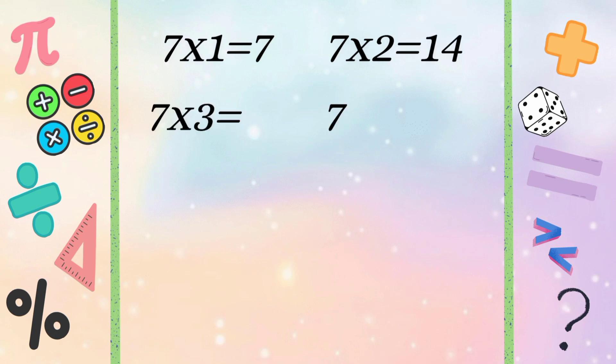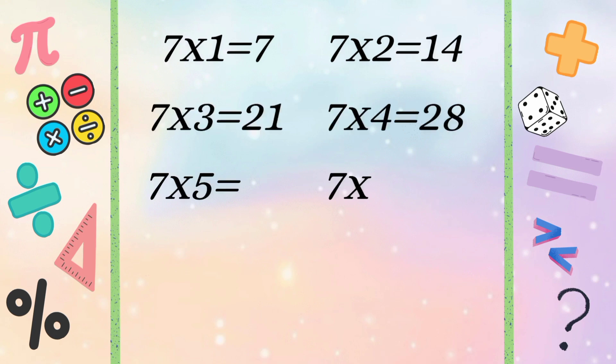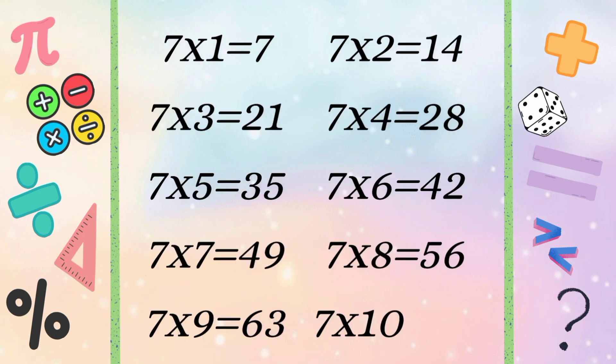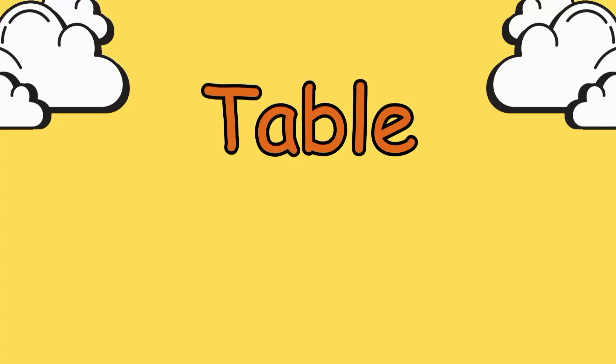Table of 7: 7 1s are 7, 7 2s are 14, 7 3s are 21, 7 4s are 28, 7 5s are 35, 7 6s are 42, 7 7s are 49, 7 8s are 56, 7 9s are 63, 7 10s are 70.